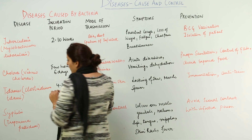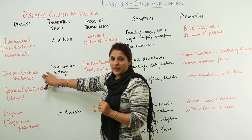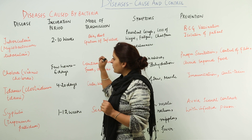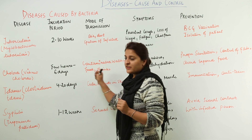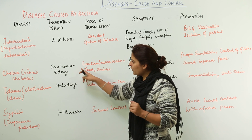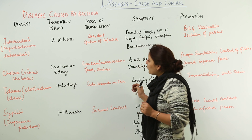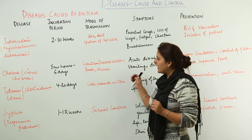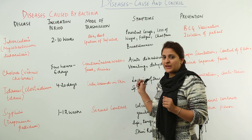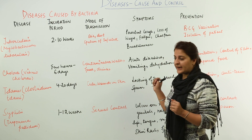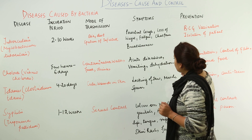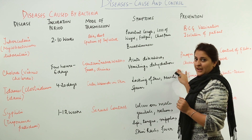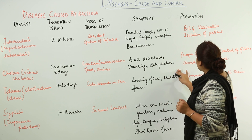The second disease is cholera, which is caused by the bacterium Vibrio cholerae. The incubation period of this disease is a few hours to 6 days. The mode of transmission of cholera is through contaminated food, contaminated water, and drinks. The symptoms include acute diarrhea, vomiting, and dehydration.